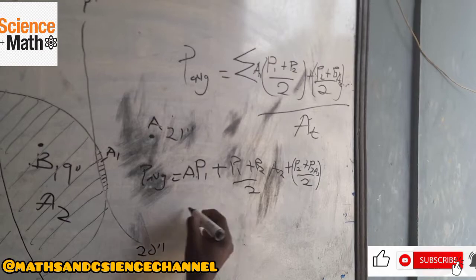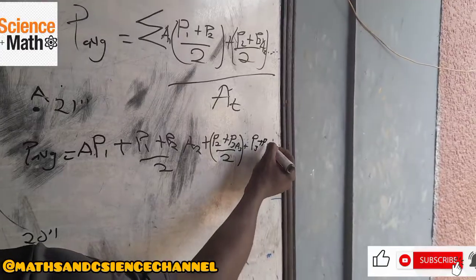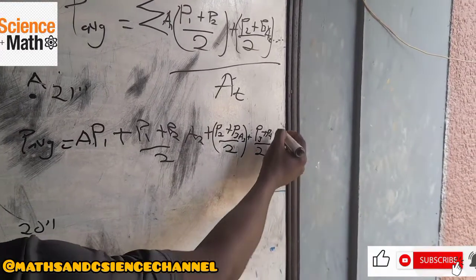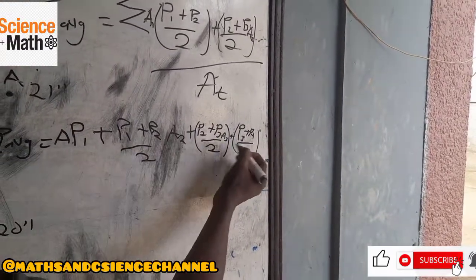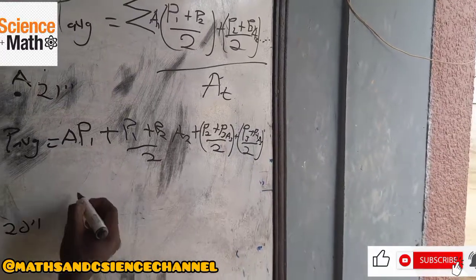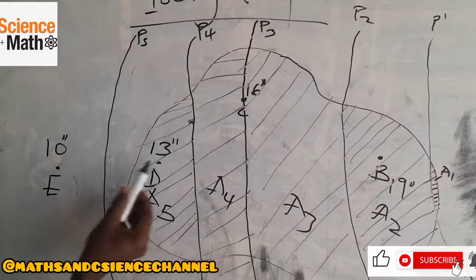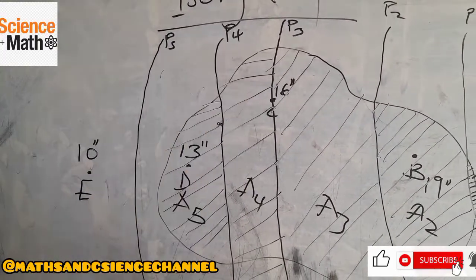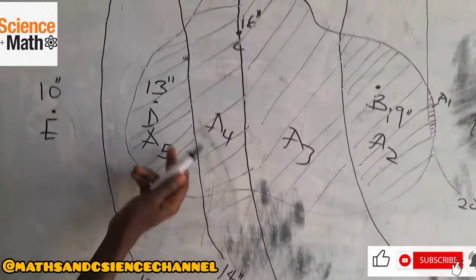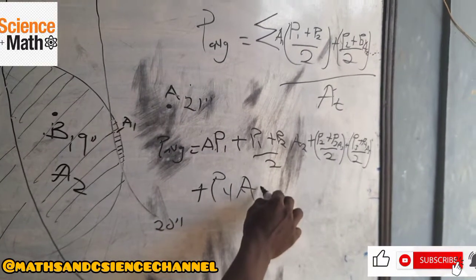The next term is P3 plus P4, divided by 2, multiplied by area 4. And looking at the last part, P5 is outside the Kachi diagram, so we just have P4 multiplied by its area alone, since there is only one precipitation station for that region.